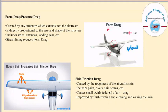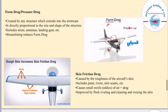Skin friction drag is caused by the roughness of the aircraft skin, which may include paint, rivets, seams, etc. Due to skin friction drag, small swirls or eddies of air are formed near the surface of the aircraft. This can be improved by flush riveting and cleaning and waxing the aircraft skin. The smoother the aircraft surface, the less skin friction drag there will be.